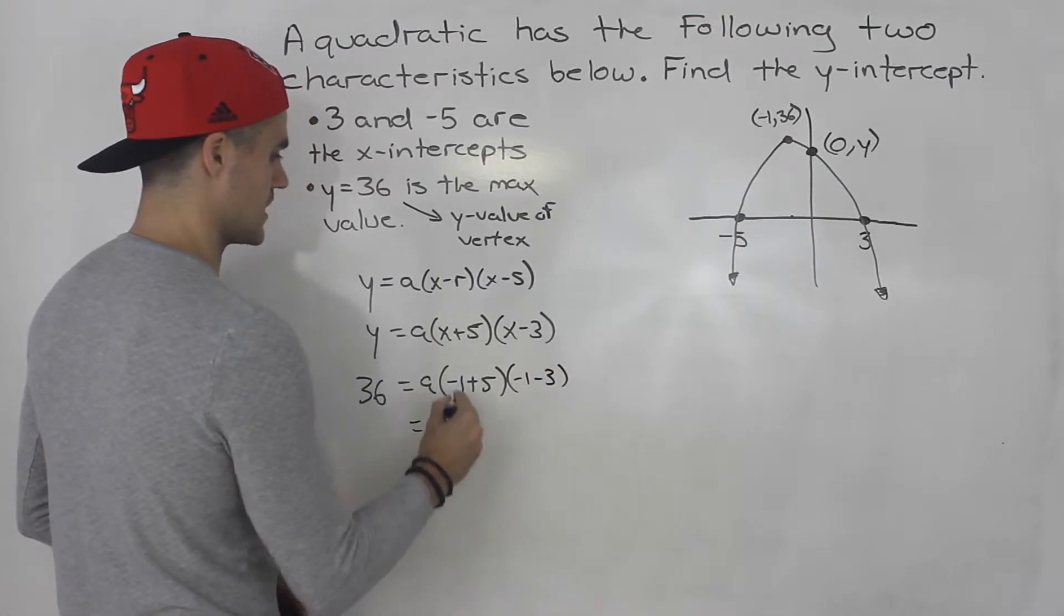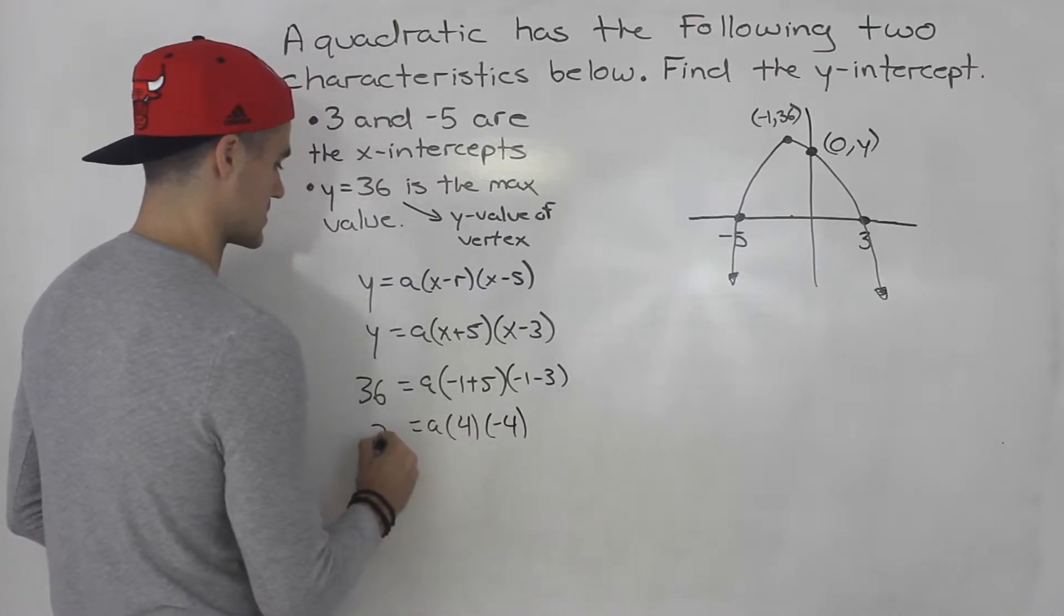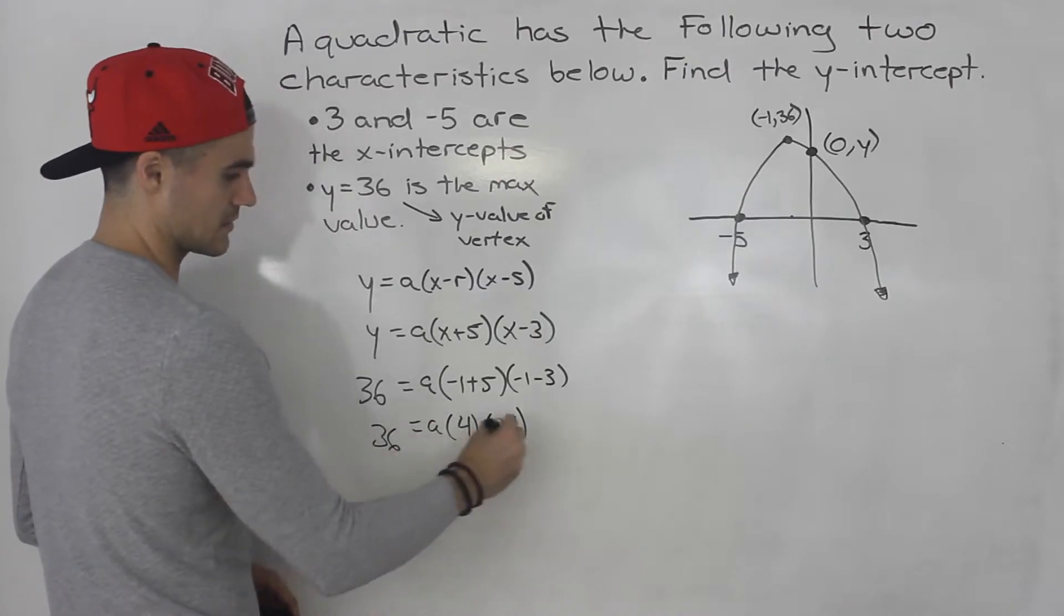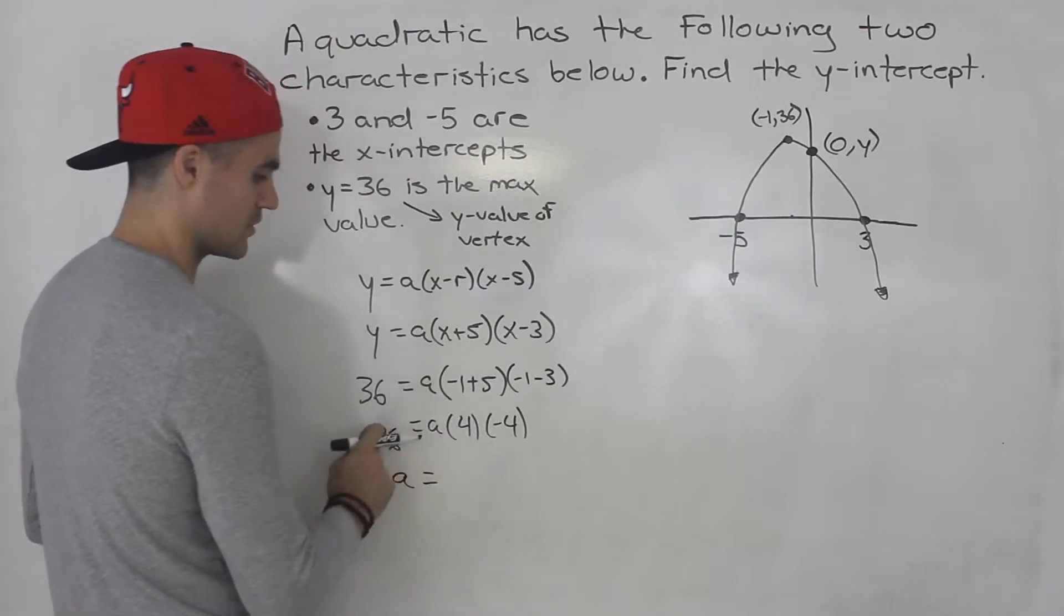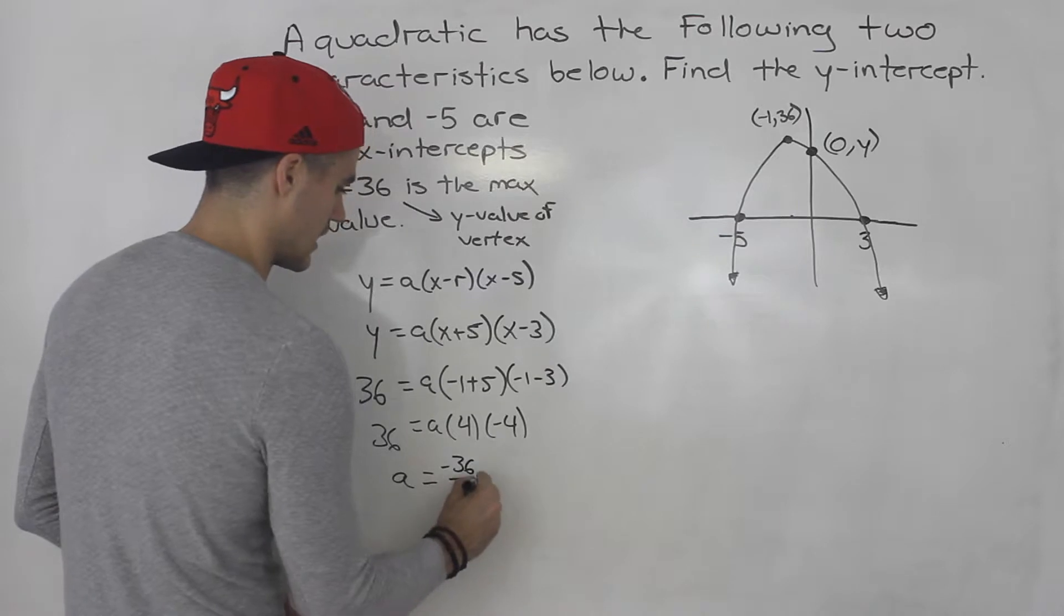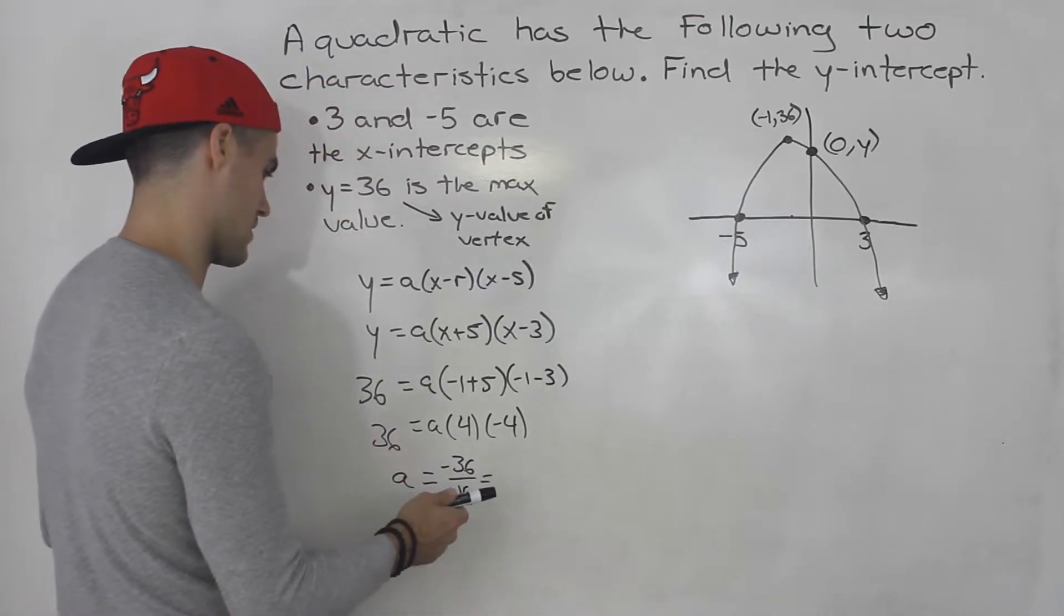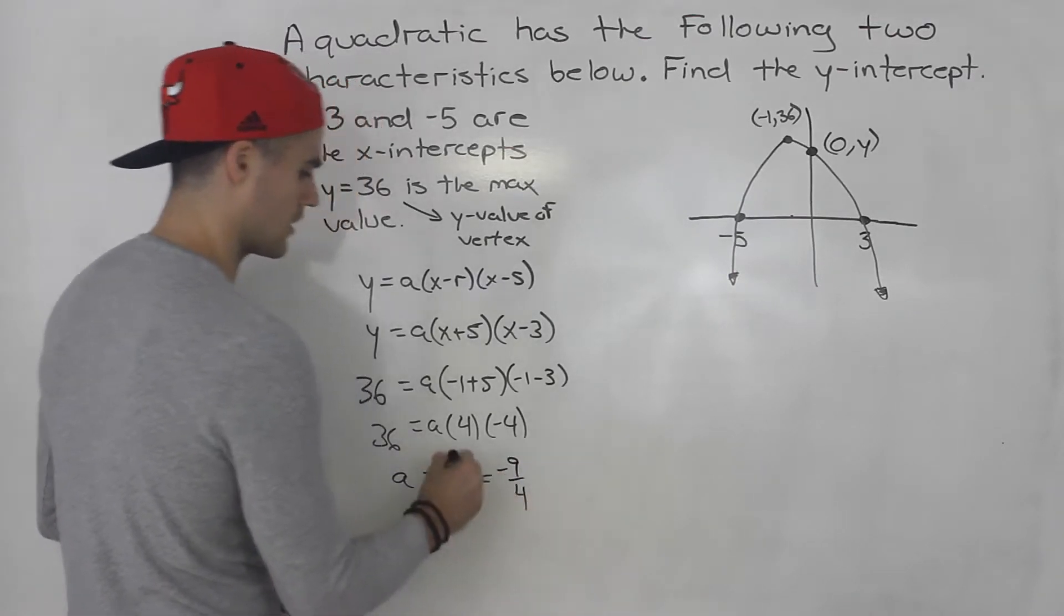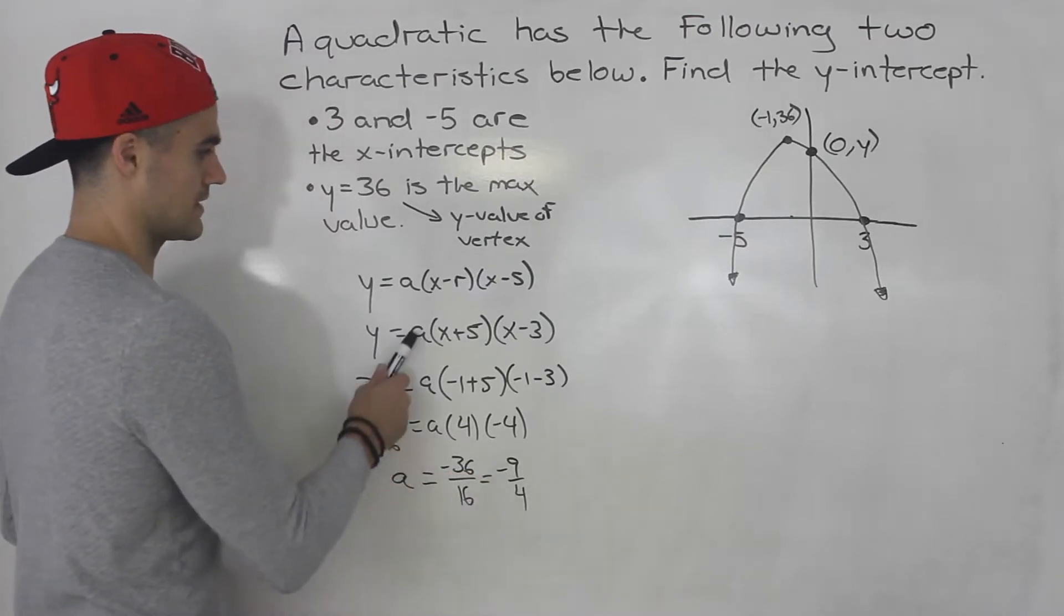So, this would be negative 1 plus 5 is positive 4. Negative 1 minus 3 is negative 4. And this is still 36. So, this would end up being negative 16a. So, a would be 36 divided by negative 16, or negative 36 over 16. And this actually simplifies to negative 9 over 4, right? You could divide both the numerator and the denominator by 4. So, negative 9 over 4 is the a value.